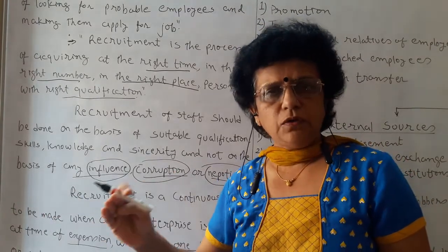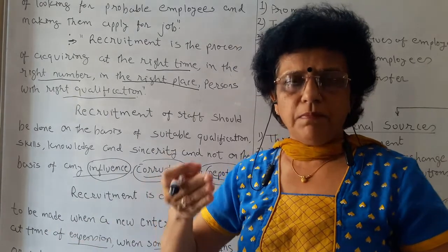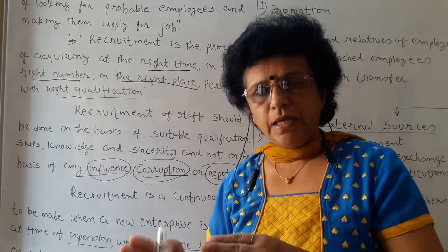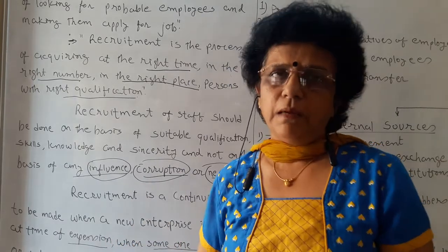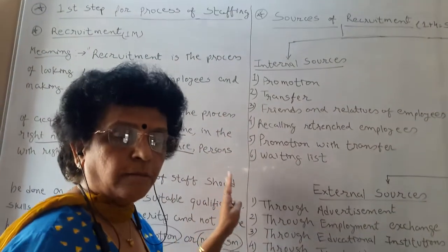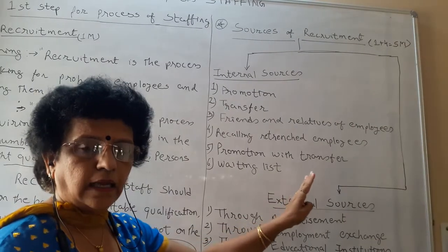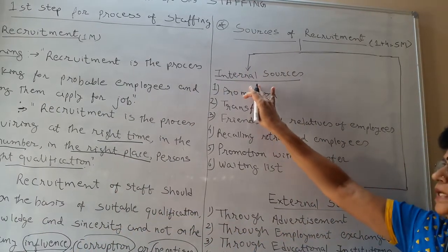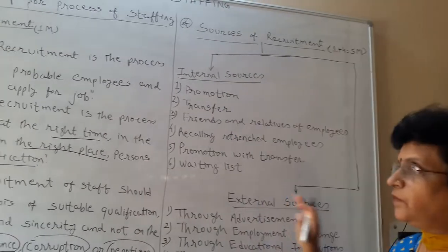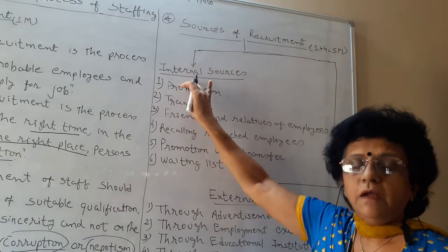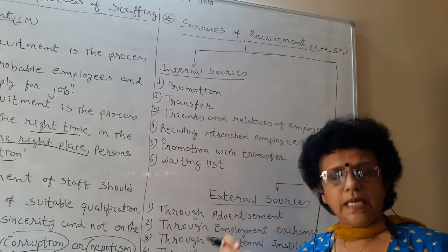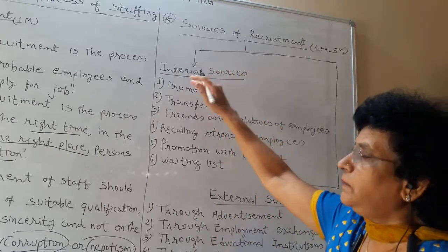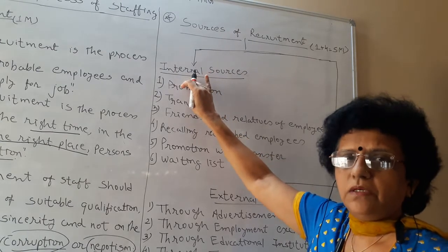Recruitment is a continuous process in which we encourage members to go for the selection procedure and try to arrange a meeting between the probable employer and probable employee. To do this work, the available sources can be classified into two ways: internal source and external source. Within an organization itself you can get a few of your requirements — if very few members are needed, your organization itself is a source.